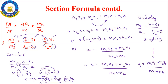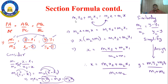Did everyone understand this? Is it interesting? Yes sir. So from this chapter, the formulae are: first, the distance formula — √((X2 − X1)² + (Y2 − Y1)²) — and then the two section formula coordinates. Please make a note of these.